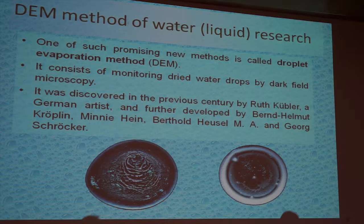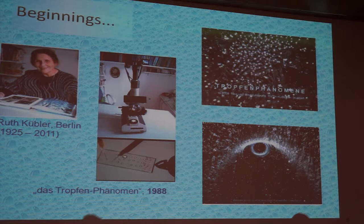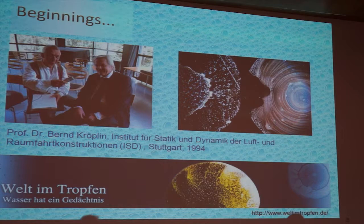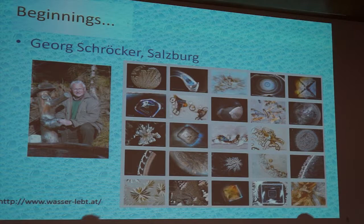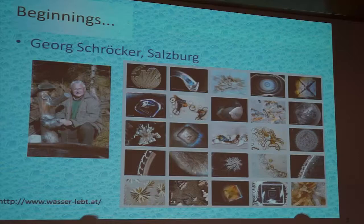One such promising new method is the so-called droplet evaporation method, or DEM. It was discovered or developed by Ruth Kübler from Berlin, and further developed by Dr. Bernard Gröplin, also a German scientist. It is currently researched by Professor Georg Schroker from Salzburg. Two years ago, his work was presented by Dr. Pierre Madl, who is here among us, and that lecture inspired me to begin using this method at our institute.